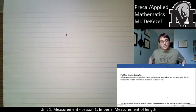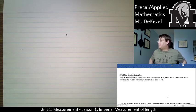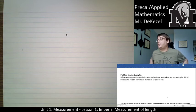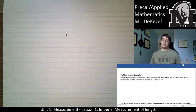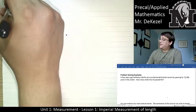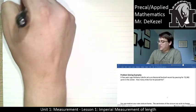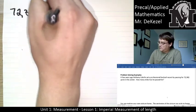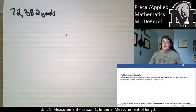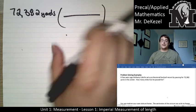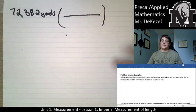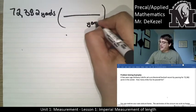Let's solve some problems. A few years ago, Anthony Calvillo set a professional football record for passing 72,382 yards. How many miles has he passed for? This is really a question of conversions. We take 72,382 yards and the question wants to know how many miles that is. I'm going to use my brackets: what we have goes on the bottom and what we want goes on the top.